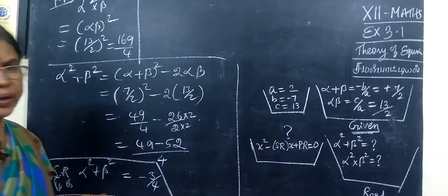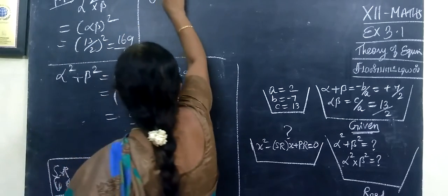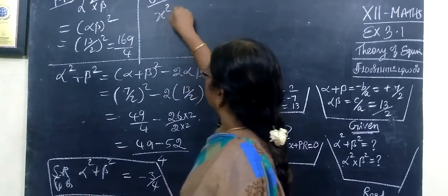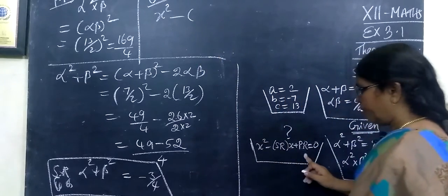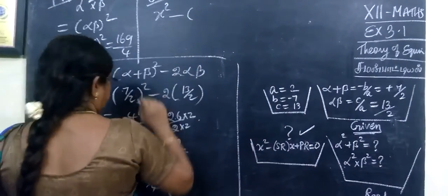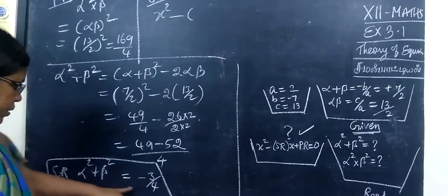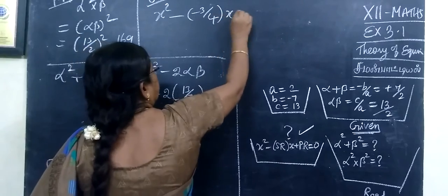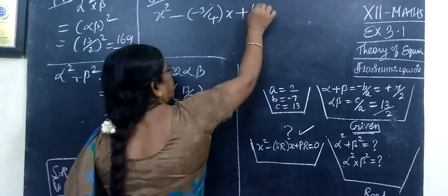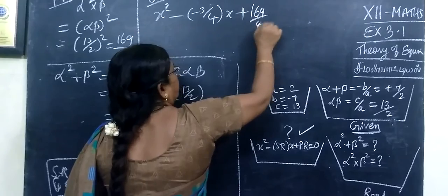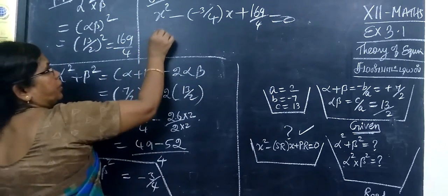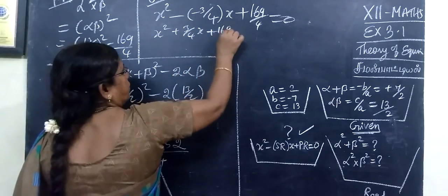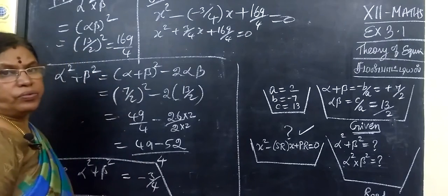So we know the sum of the root and product of the root. Using the quadratic equation formula — x squared minus (sum of roots)x plus (product of roots) equals 0 — we substitute: x squared minus (minus 3 by 4)x plus 169 by 4 equal to 0, giving x squared plus 3 by 4 x plus 169 by 4 equal to 0.